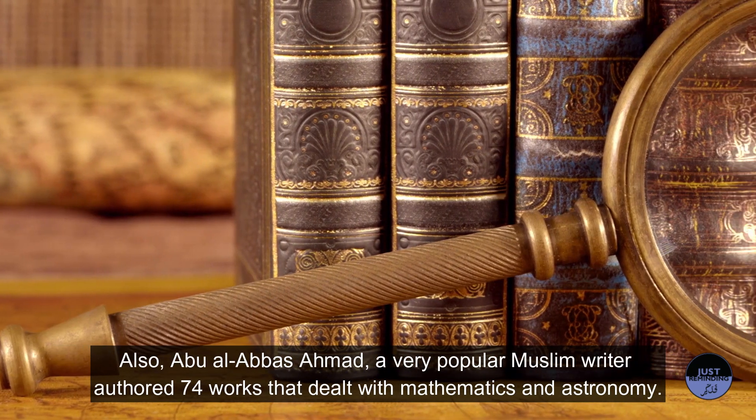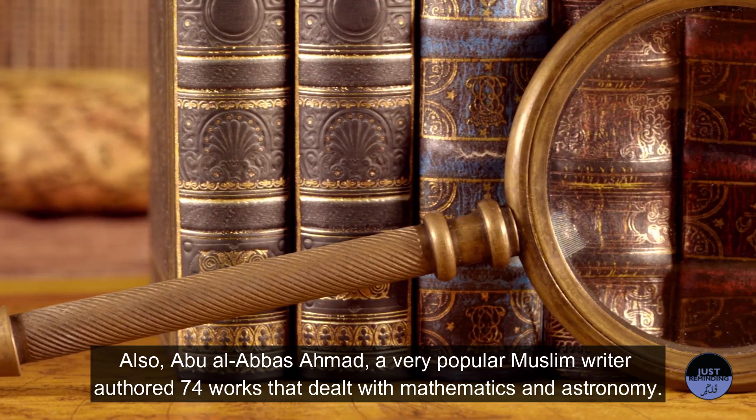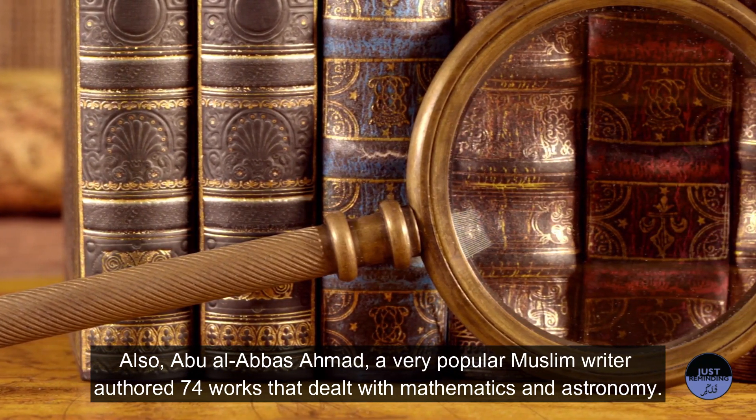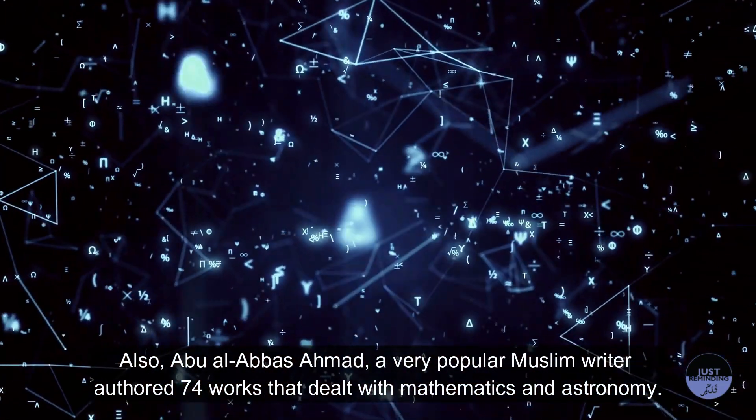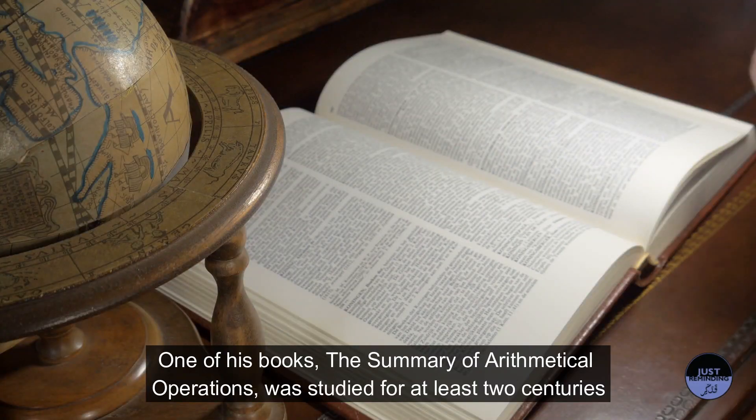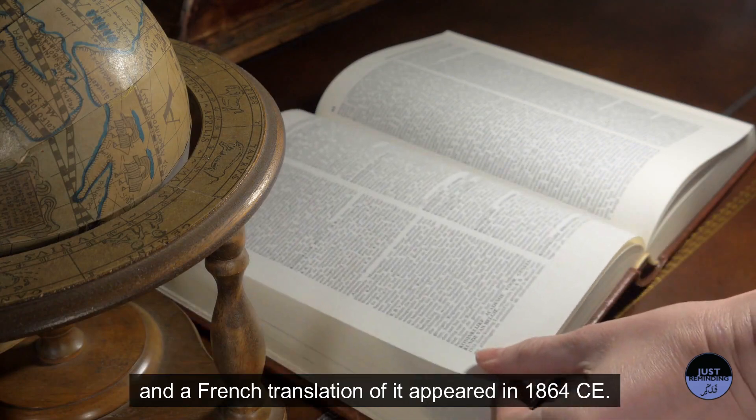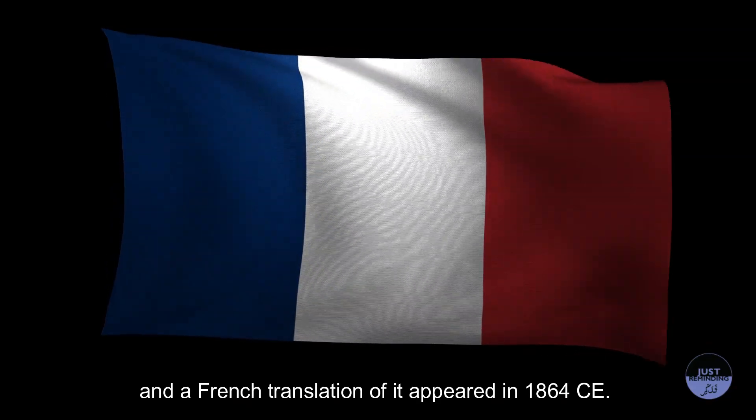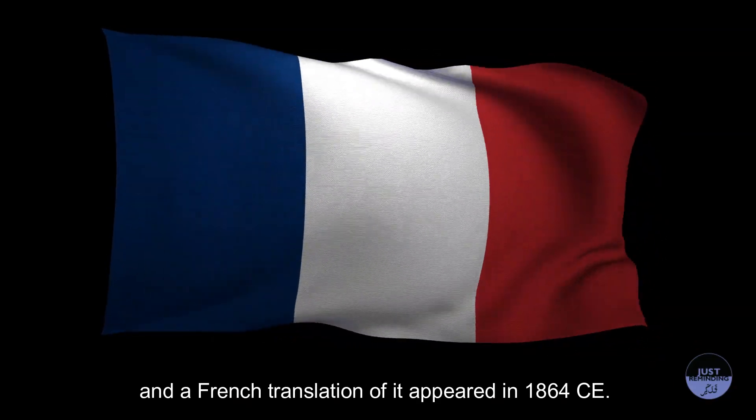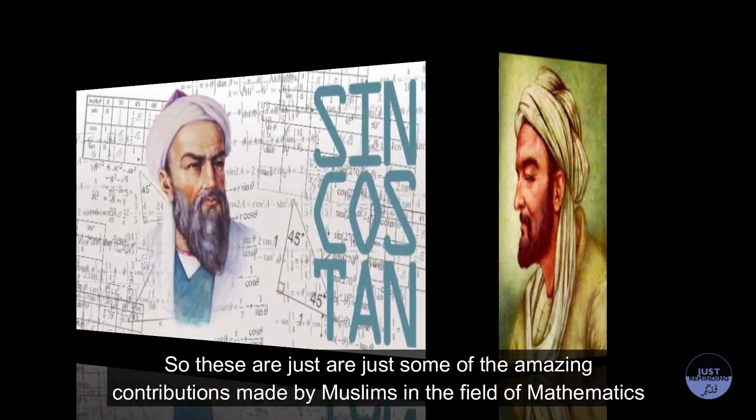Abu Al-Abbas Ahmed, a very popular Muslim writer, authored 74 works that dealt with mathematics and astronomy. One of his books, the Summary of Arithmetical Operations, was studied for at least two centuries, and a French translation of it appeared in 1864 CE.